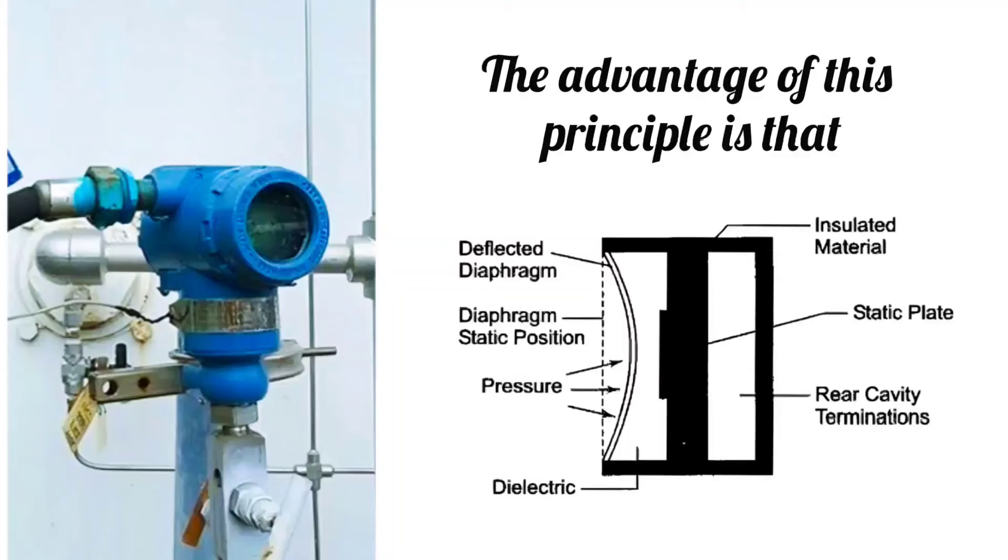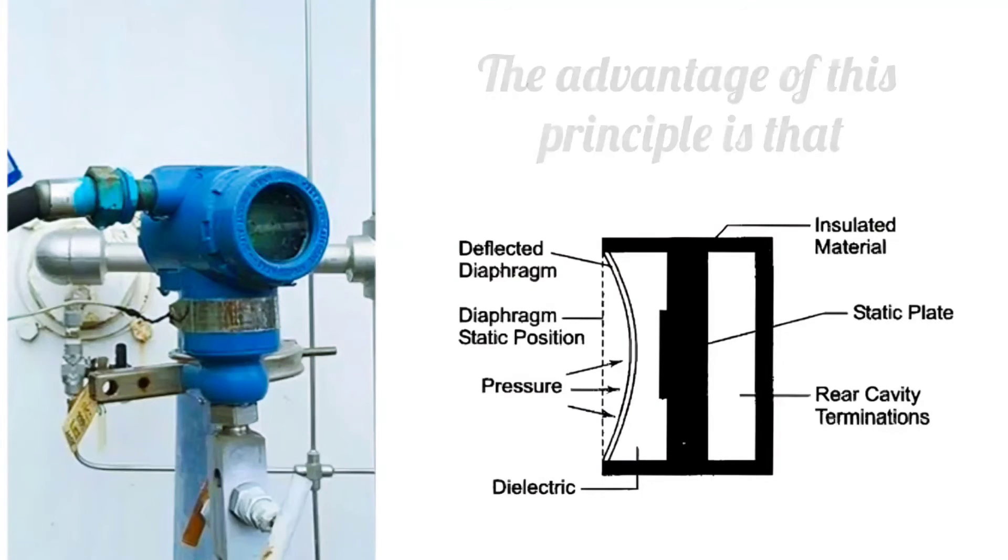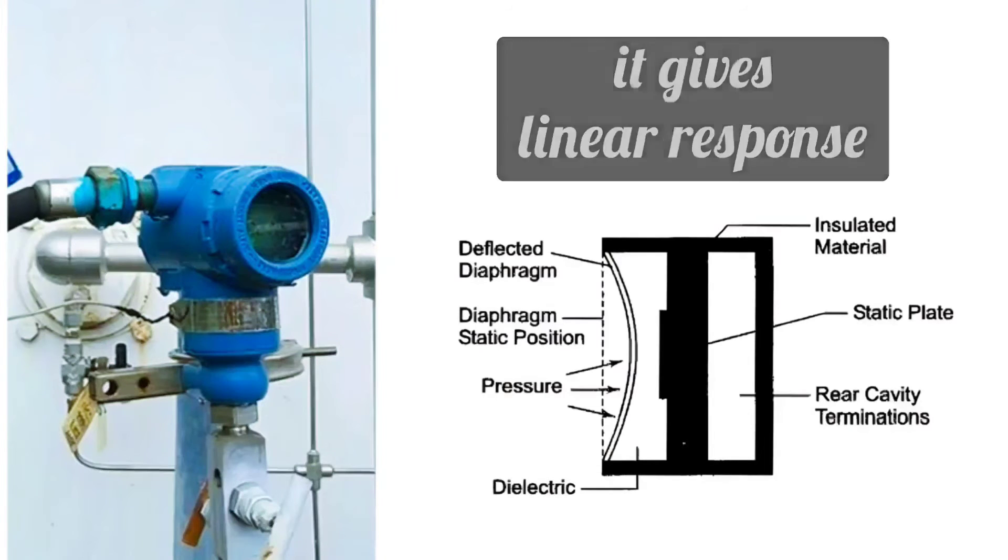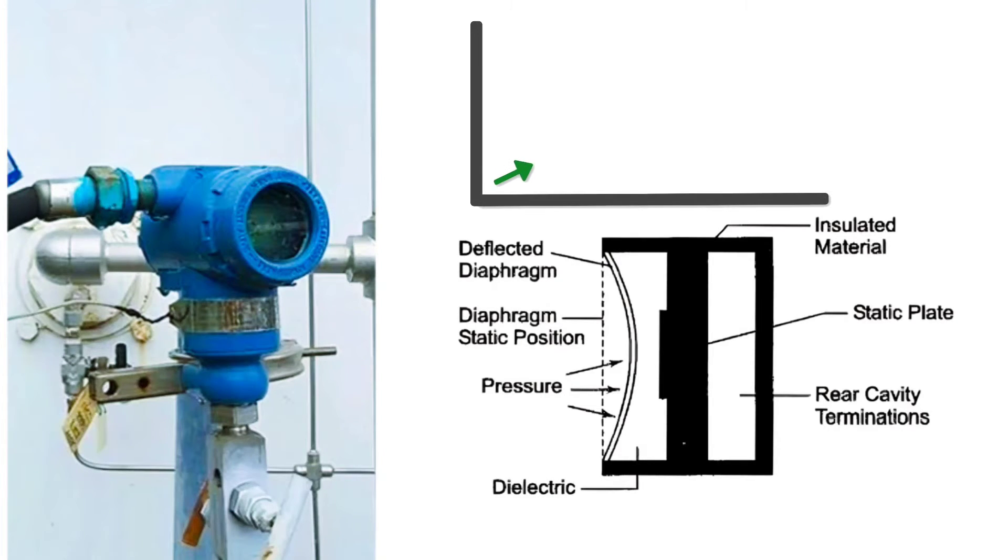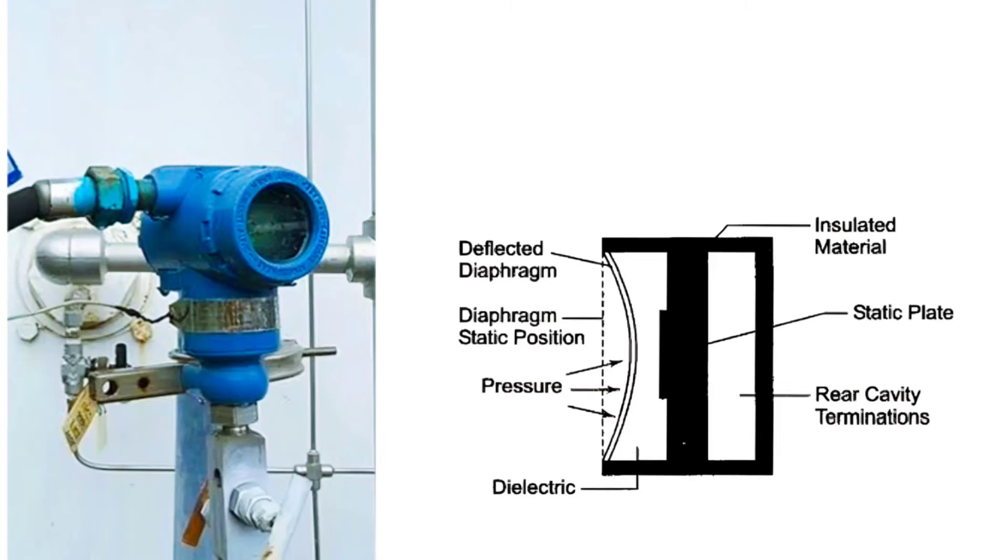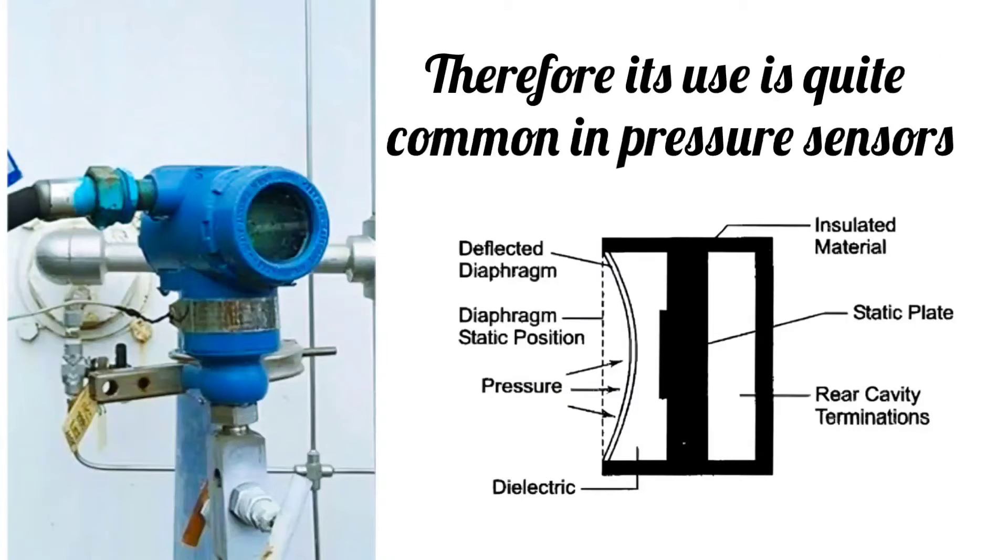The advantage of this principle is that it gives linear response. That means there is a proportional change in capacitance as the pressure changes. It provides reliable and accurate measurements. Therefore, its use is quite common in pressure sensors.